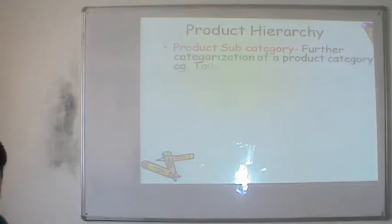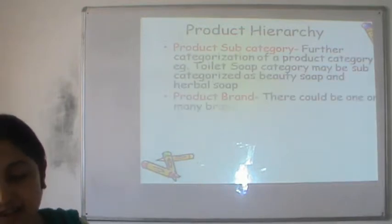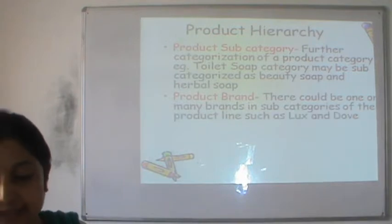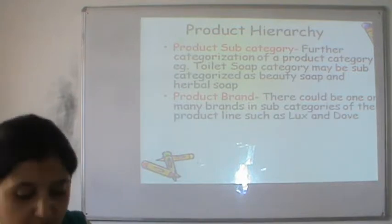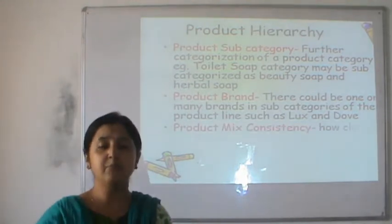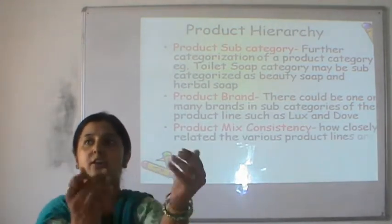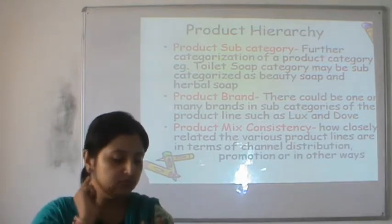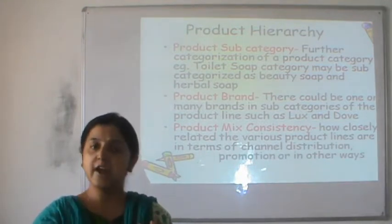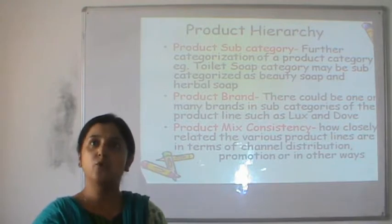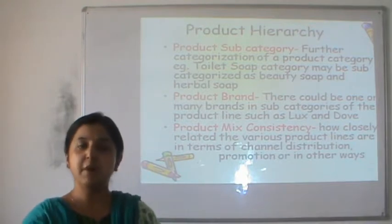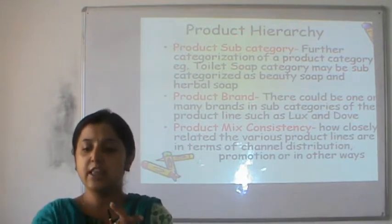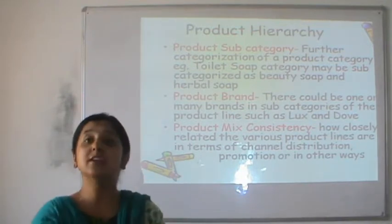Before moving on, let us understand how the product hierarchy progresses. Taking Unilever as an example: they are into personal care, fabric care, oral care, cosmetics, beverages, etc. Each one of these categories is different from the other — that is the product category. The second level is the product sub-category. For instance, in the personal care category they make body wash as well as hair wash — that is the product sub-category.